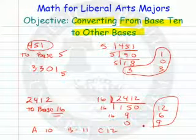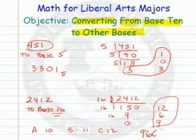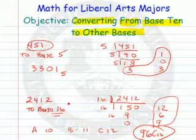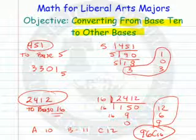So the answer to this problem would then be 9, 6, C. 96C in base 16 is equal to 2412 in base 10. Hope it helps you converting to other bases from base 10. And as always, have a very happy day.